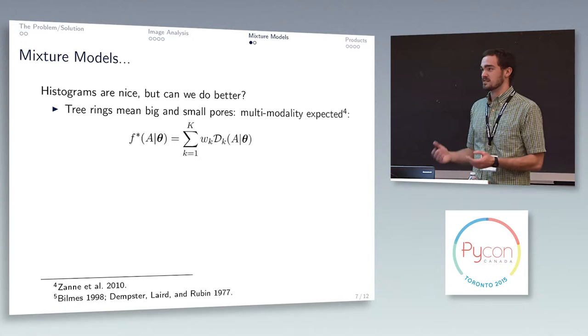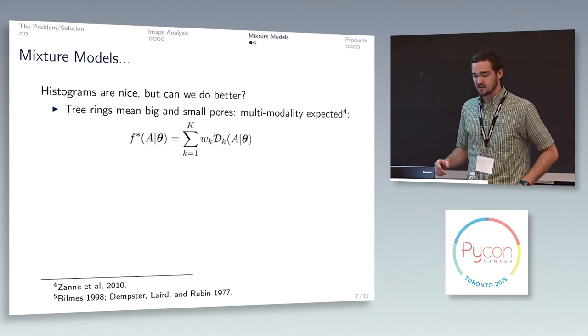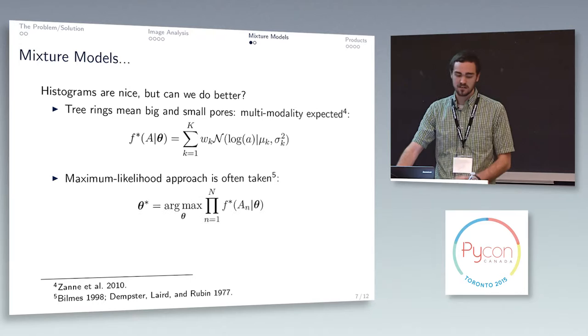Going back to the tree ring thing, there's some big pores, there's some little pores, both of those bigger pores, littler pores in the little and big. So we know that you can do a weighted sum of different distributions. We even know that we expect it to be log normally distributed.